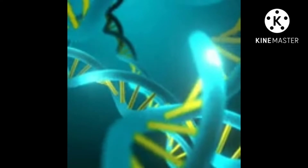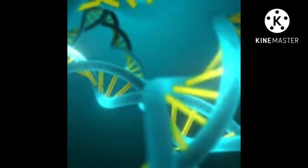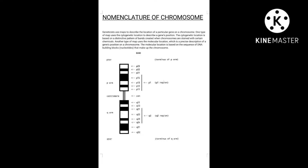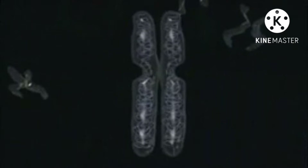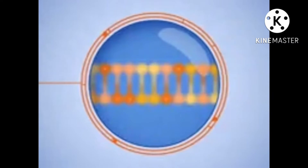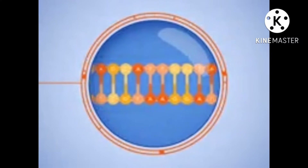Welcome to bioanalysis. Today our topic is nomenclature of chromosomes. Chromosome nomenclature mainly depends on the positions of the chromosome and the precise positions of genes in the chromosome. In eukaryotic cells, there are many chromosomes, and various genes are present in various chromosomes. So identifying a specific gene in a specific chromosome is very difficult.